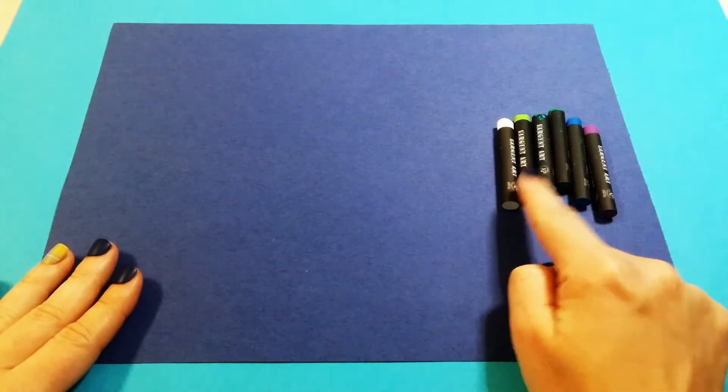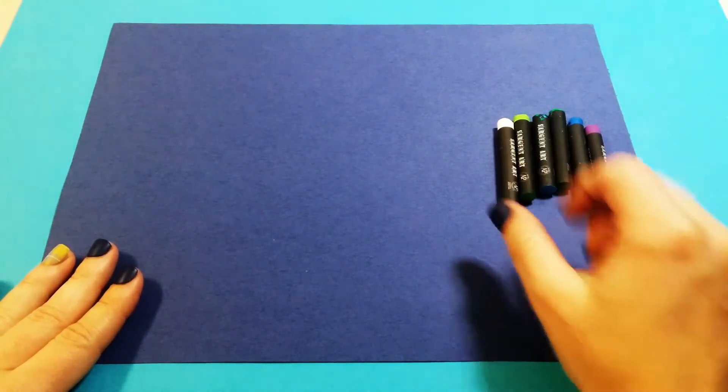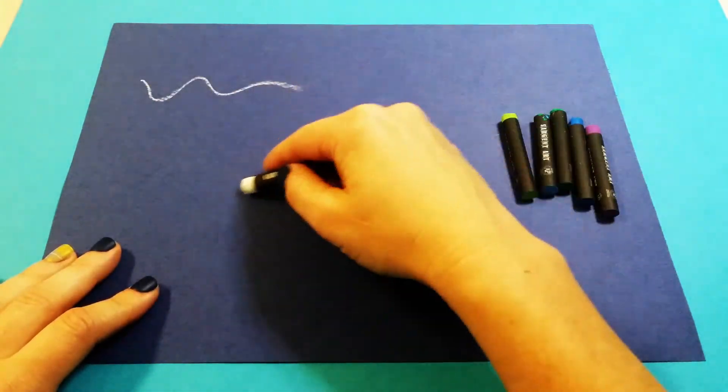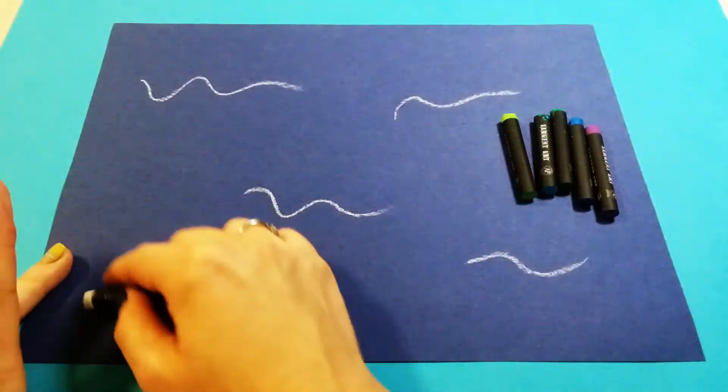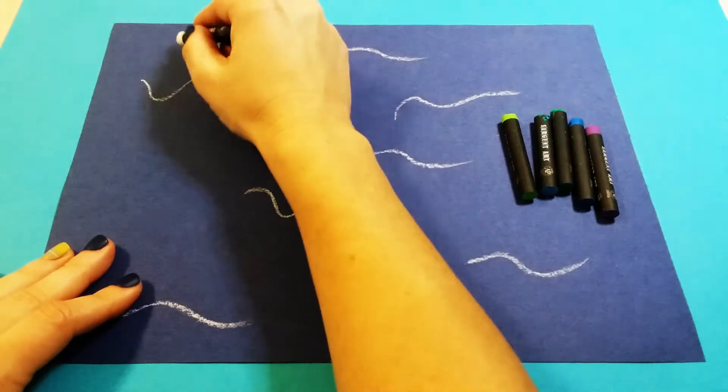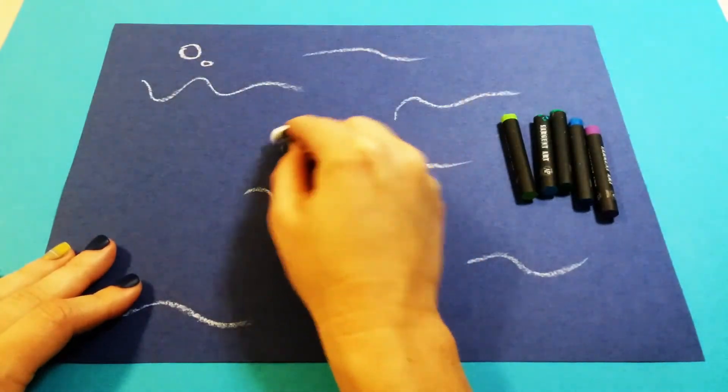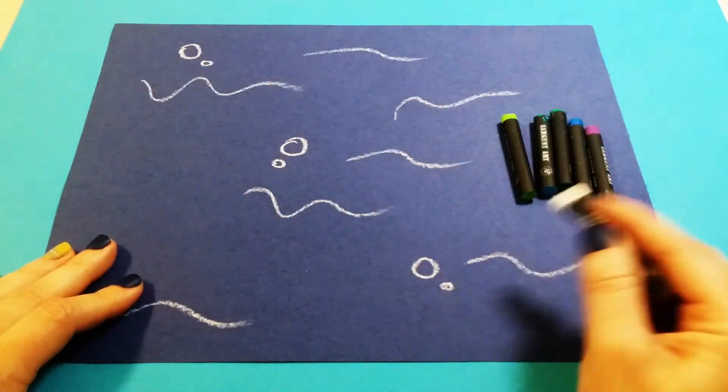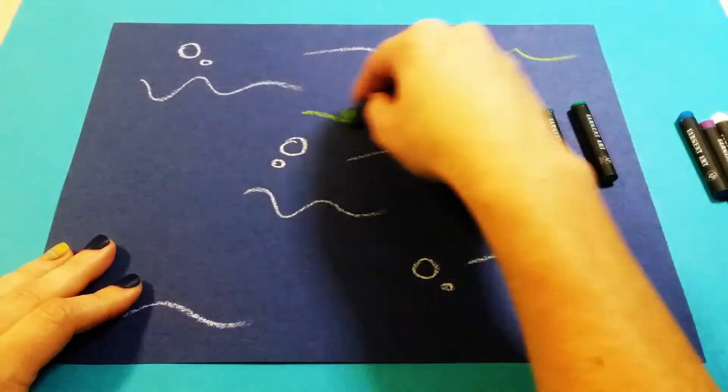Your cool colors are your greens, your blues, and your purples. And what you're going to do is just start by drawing some wavy lines randomly all over your paper and also some little circles for bubbles. And you're going to do this with every color that you've picked out.